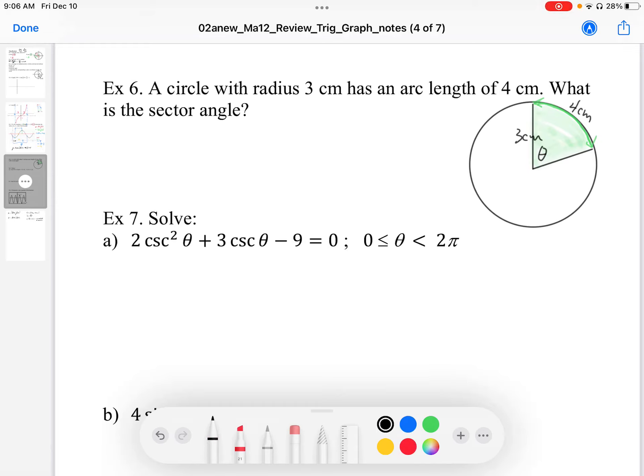We have a circle with radius 3 and arc length of 4. We want to know the sector angle. So I've sketched a diagram here to give me an approximation of what this might look like. I've got my radius of 3. That arc length is a little bit longer than the radius. This isn't perfectly accurate but gives me an idea of what I'm looking for.